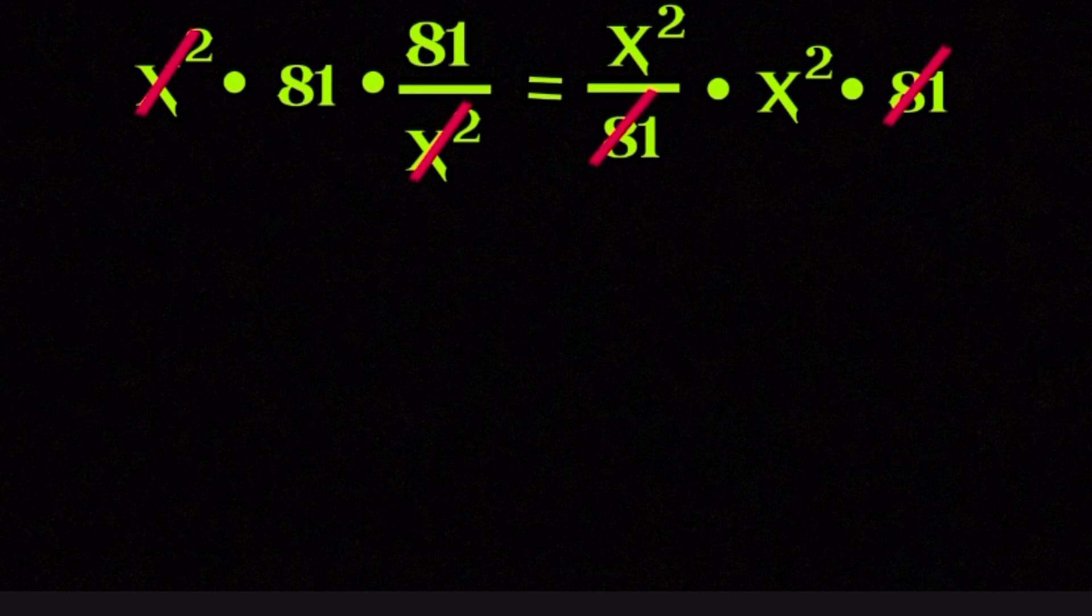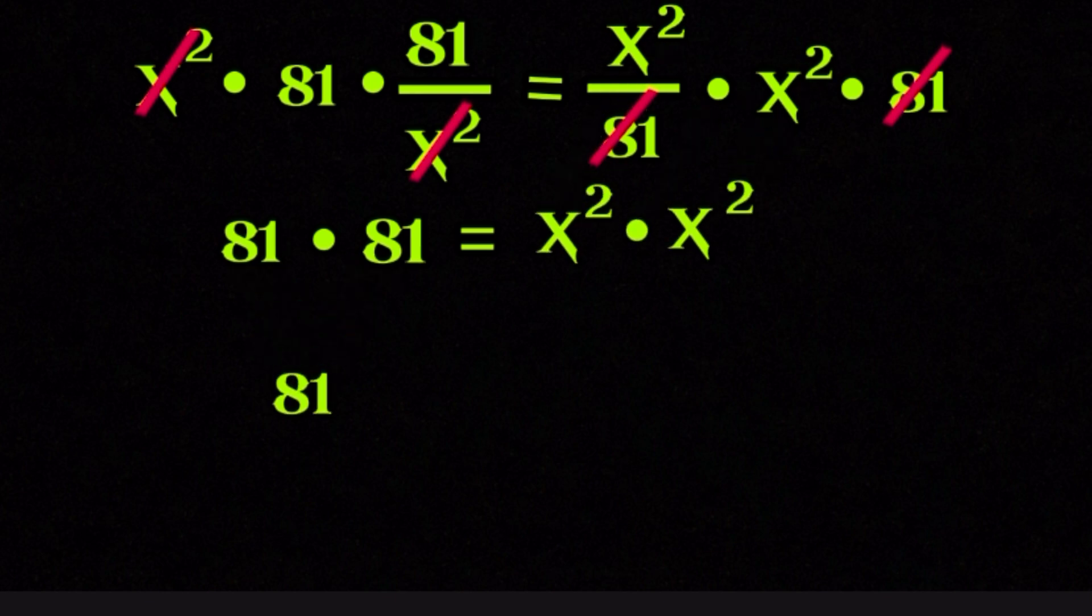When we do that, the left side becomes 81 multiplied by 81, and the right side becomes x squared multiplied by x squared, and this immediately simplifies the equation to 81 squared equals x to the power of 4.